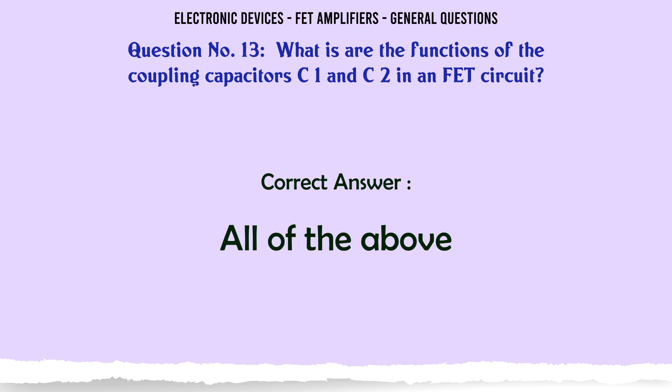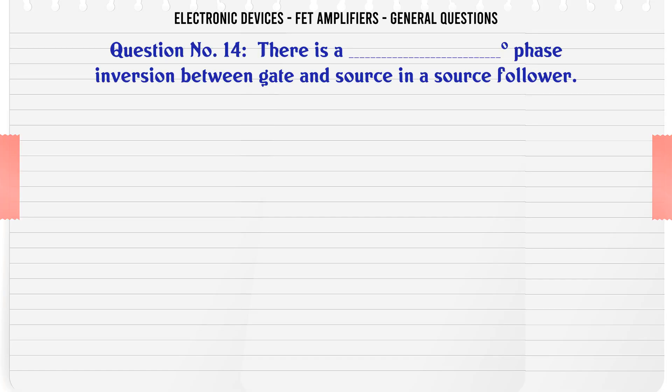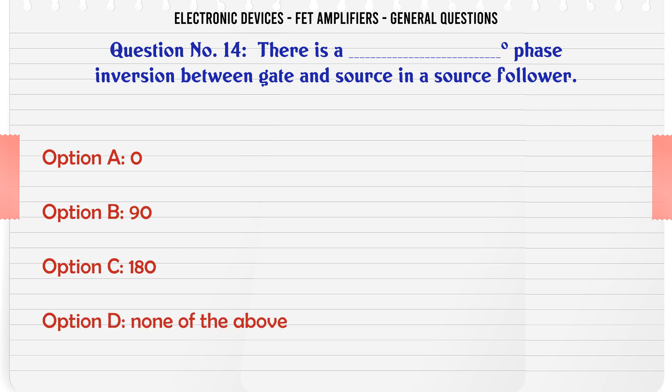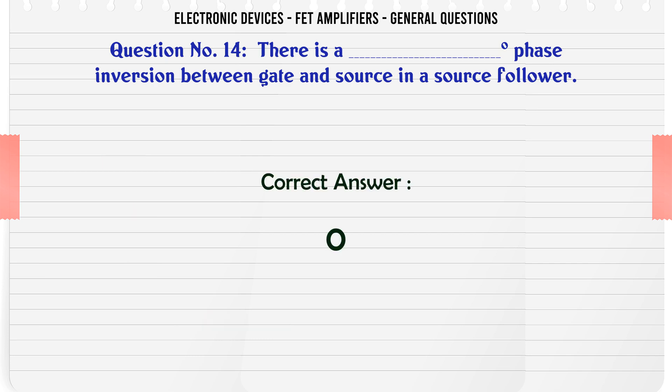There is a phase inversion between gate and source in a source follower of how many degrees? A. 0°. B. 90°. C. 180°. D. None of the above. The correct answer is 0°.